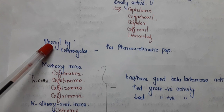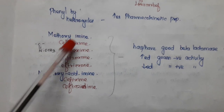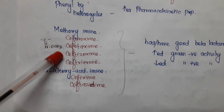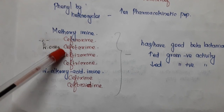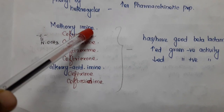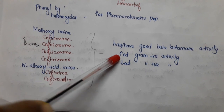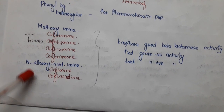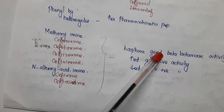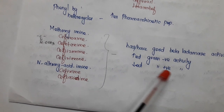If we introduce a heterocyclic ring instead of a phenyl ring, the pharmacokinetic properties are increased. If we introduce methoxyimine in the seventh portion — imine means C=N, and with the nitrogen a methoxy group is added — the compound has good beta-lactamase stability, increased gram-negative activity, and decreased gram-positive activity. Examples include cefuroxime, cefotaxime, ceftizoxime, and ceftriaxone. If we introduce N-alkoxyacylimine, it also has good beta-lactamase activity, increased gram-negative activity, and decreased gram-positive activity.